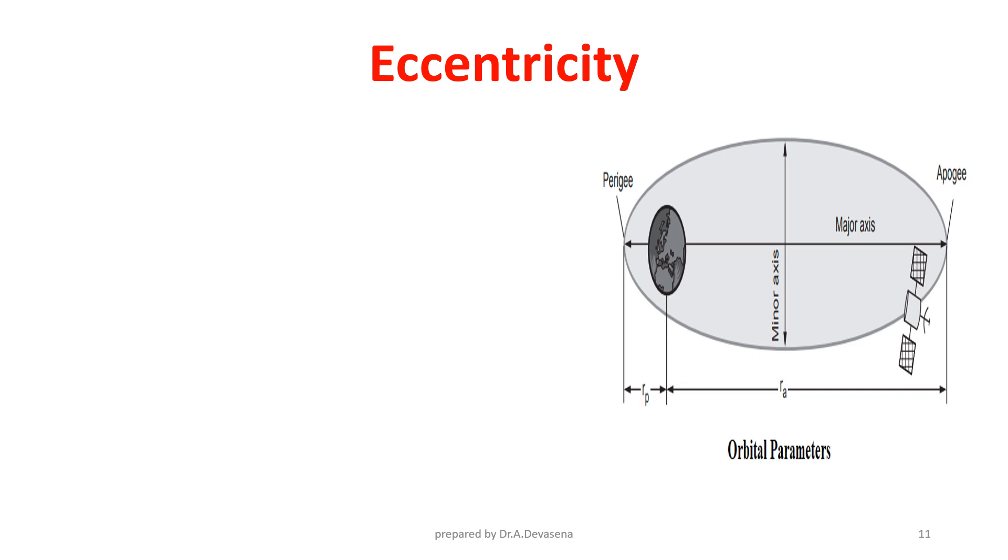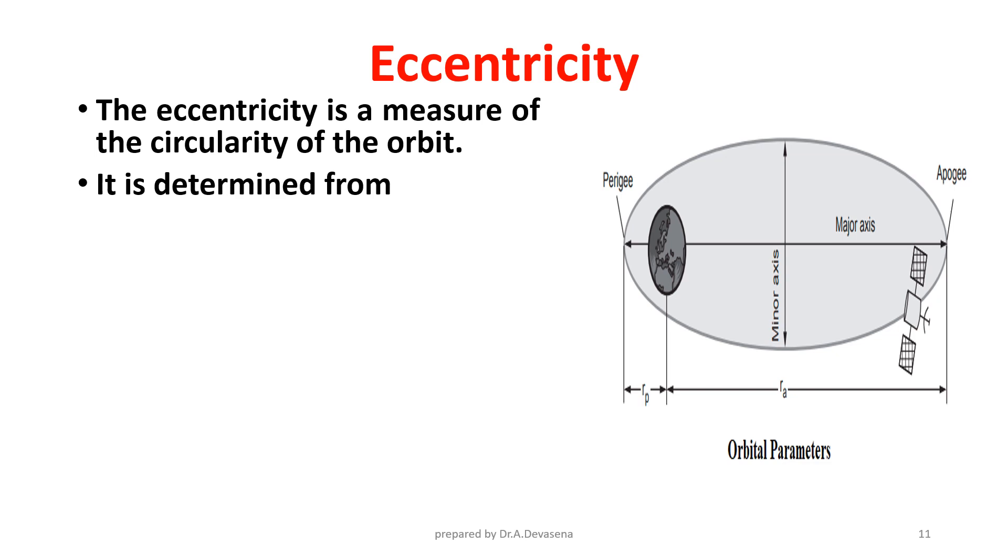Eccentricity. The eccentricity is a measure of the circularity of the orbit. It is determined from E equals R_A minus R_P divided by R_A plus R_P.